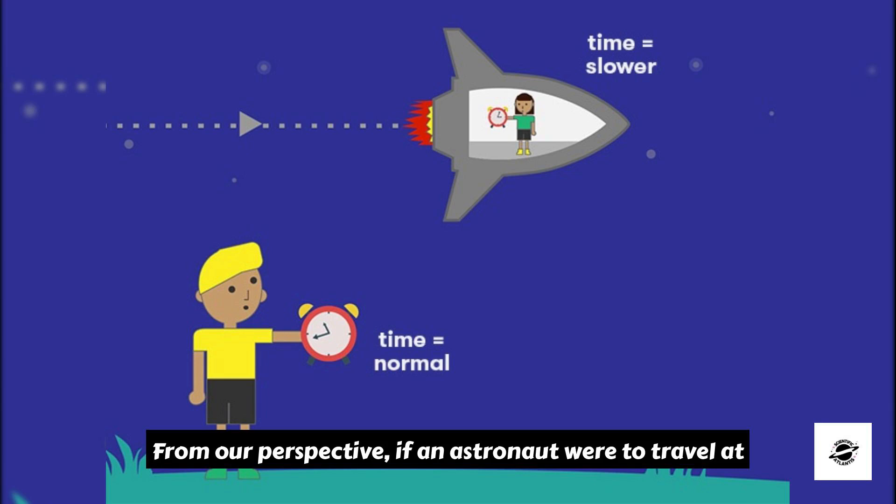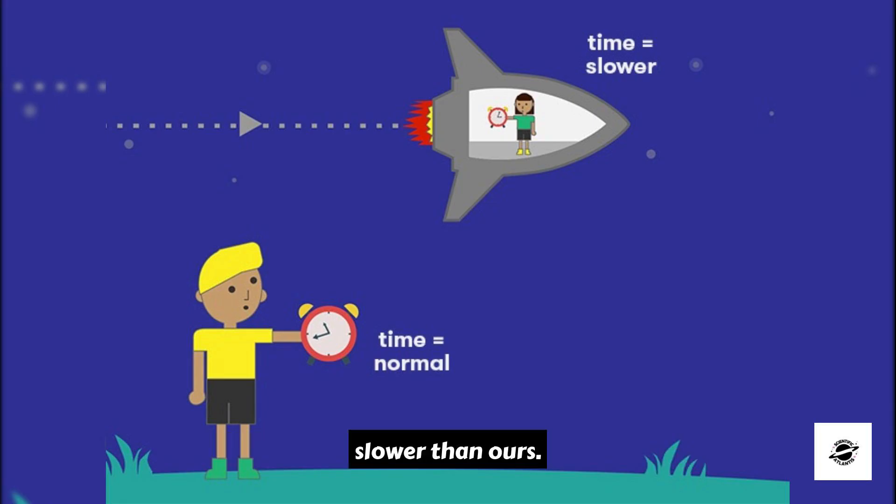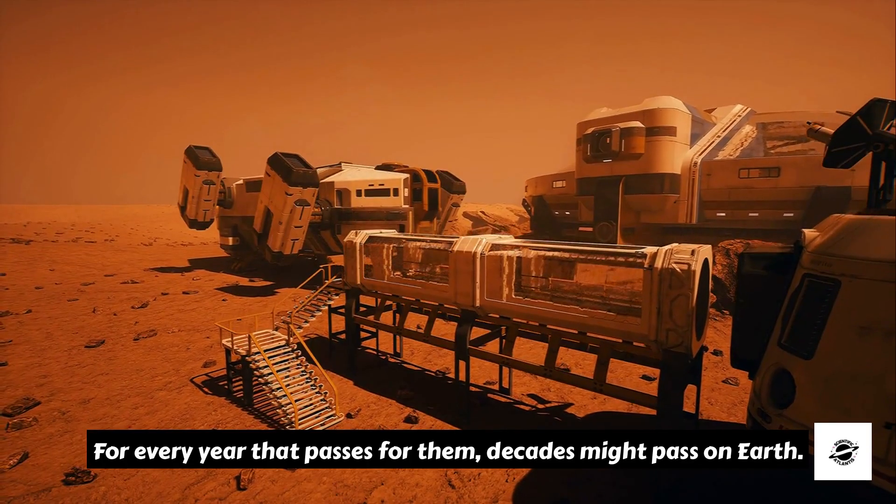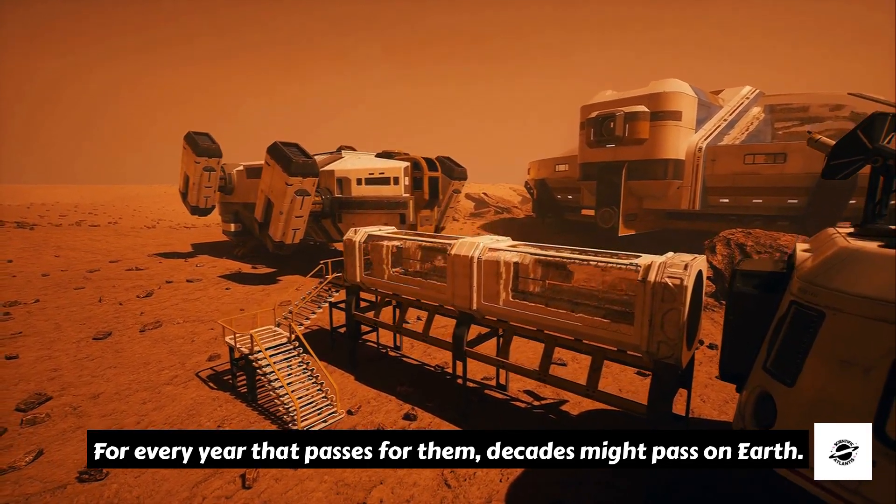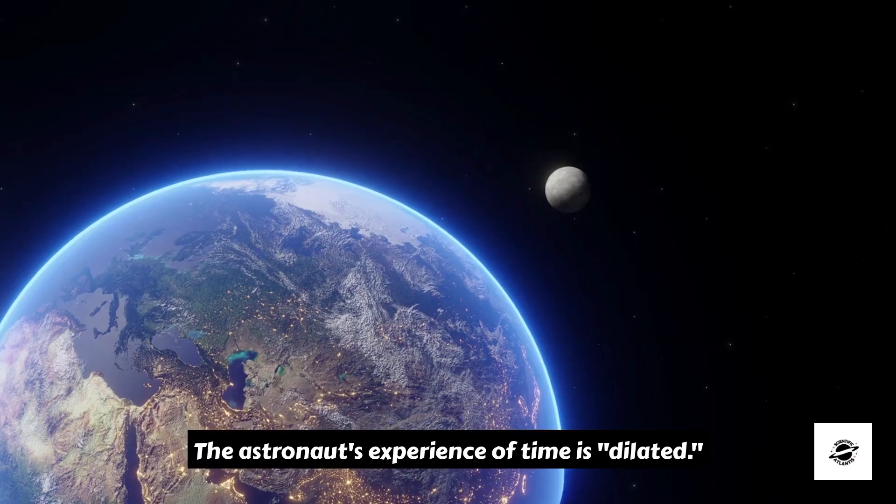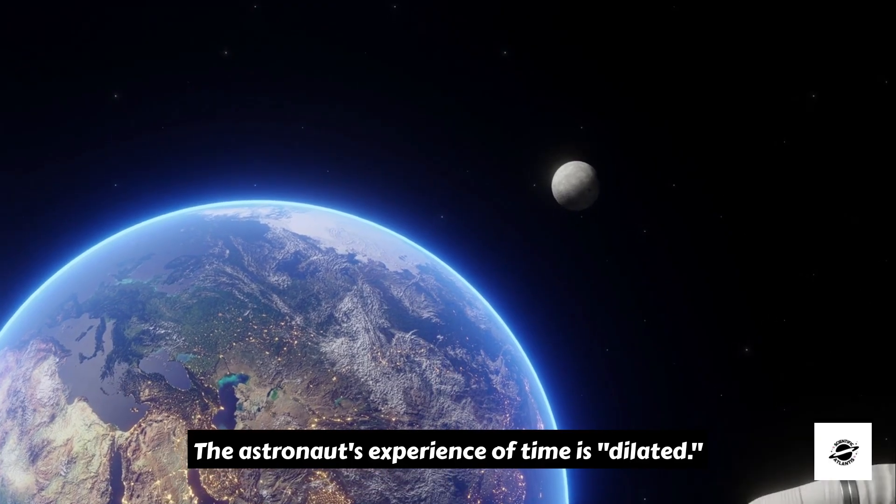From our perspective, if an astronaut were to travel at 99.9% the speed of light, their clock would tick much slower than ours. For every year that passes for them, decades might pass on Earth. The astronaut's experience of time is dilated.